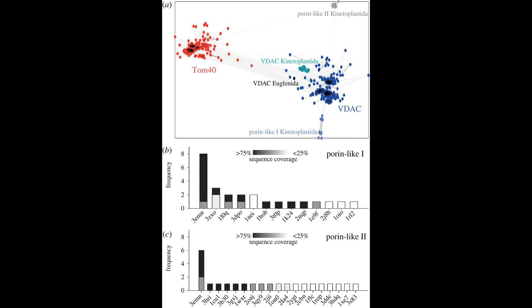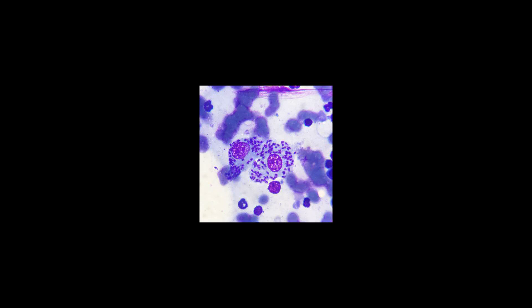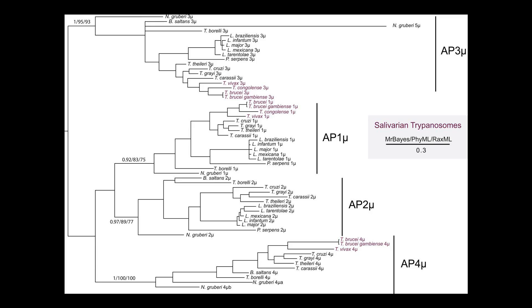Cytoskeleton. The cytoskeleton of kinetoplastids is primarily made up of microtubules. These make a highly regular array, the subpellicular array, which runs parallel just under the cell surface along the long axis of the cell. Other microtubules with more specialized roles, such as the rootlet microtubules, are also present.